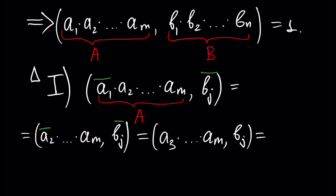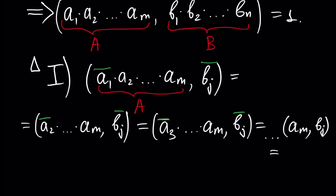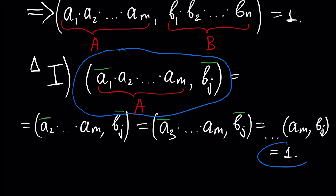Since A3 is co-prime with BJ, we can continue this process up until we have the last element AN and BJ. By the condition of our theorem, this is equal to 1. In other words, GCD of A and BJ is 1.